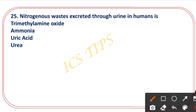The nitrogenous waste excreted through urine in humans is what? Option A is trimethylamine oxide, option B is amino acid, option C is ammonia, then uric acid, option D is urea. The right answer is urea.